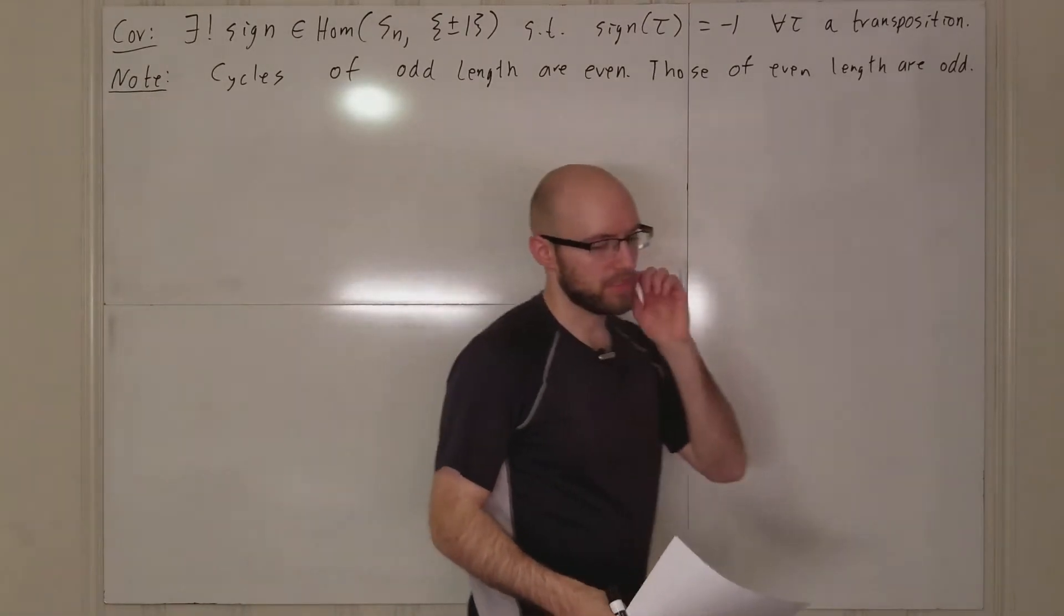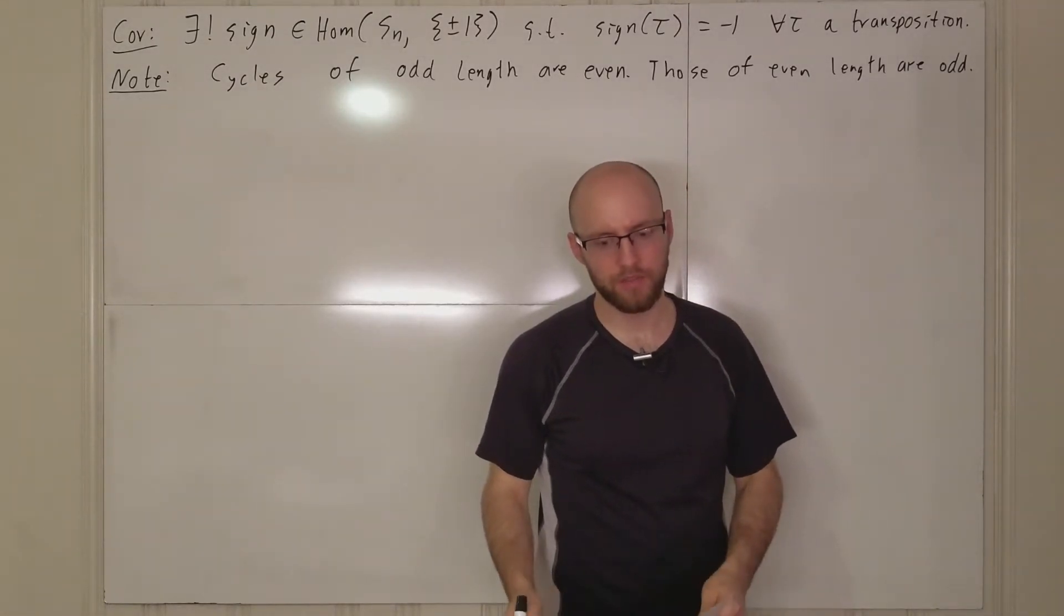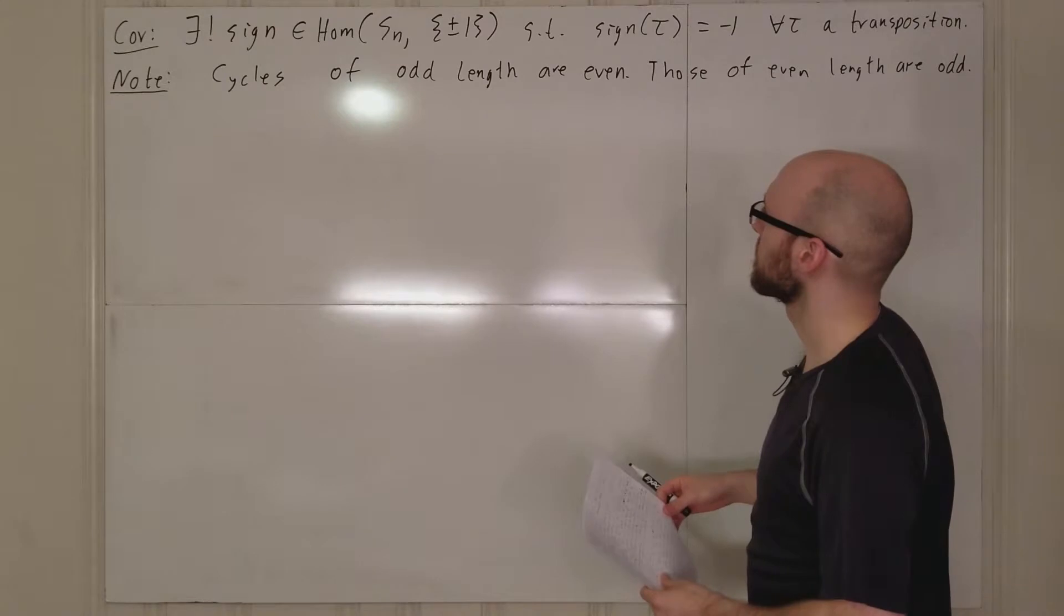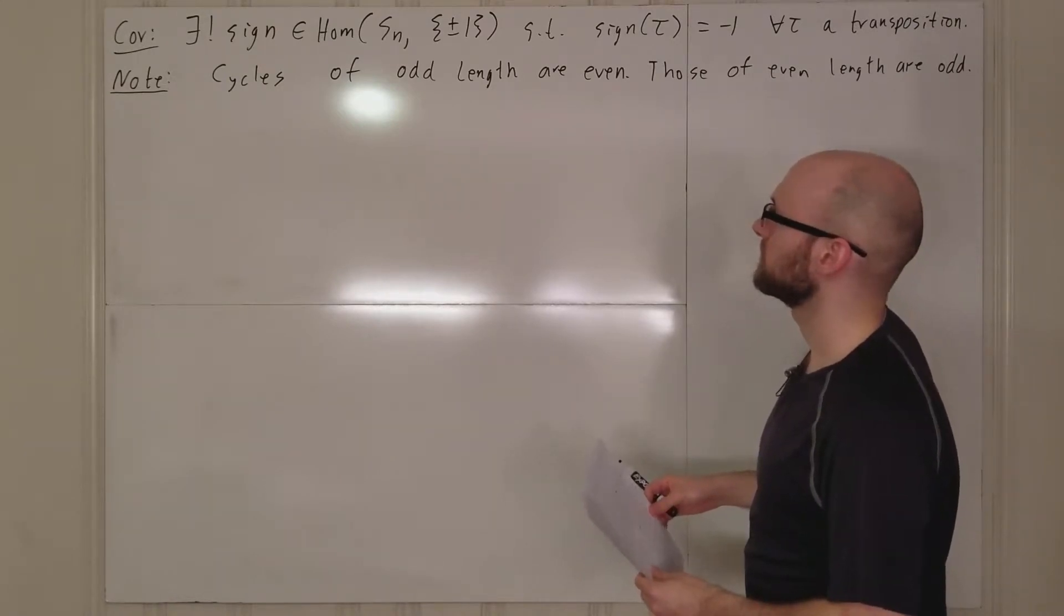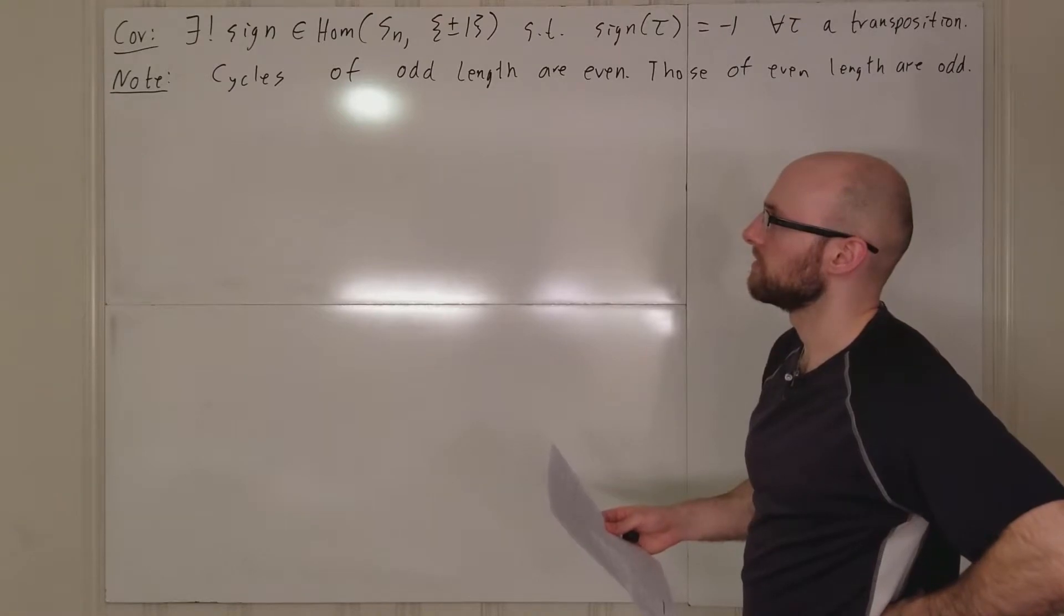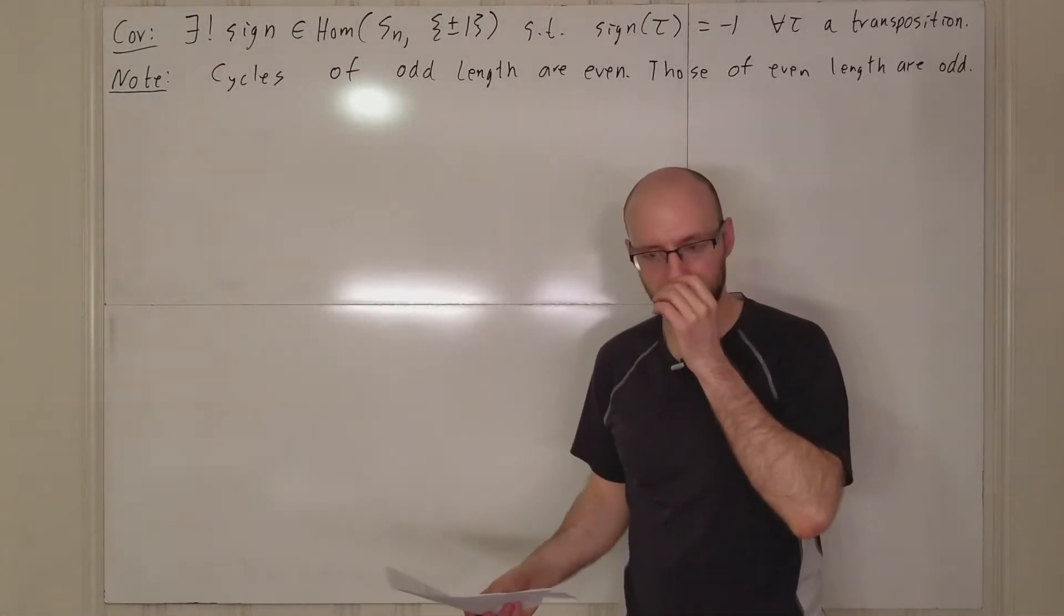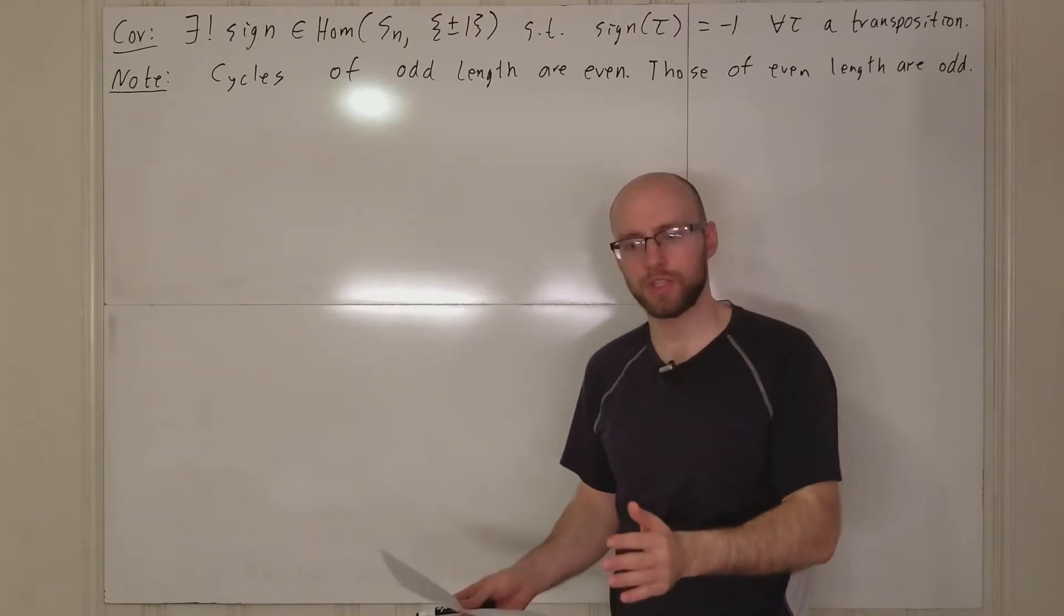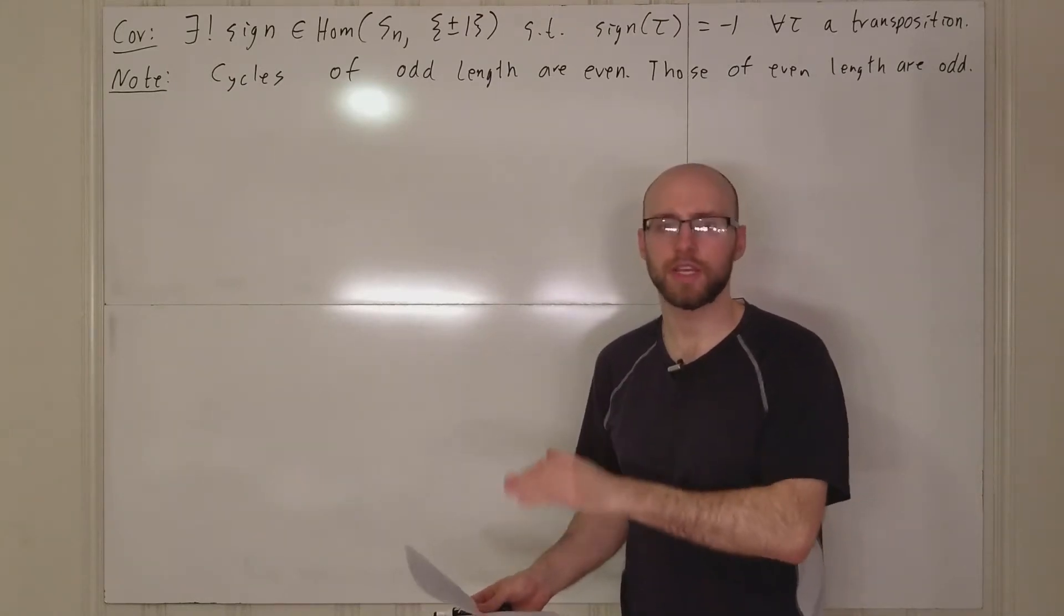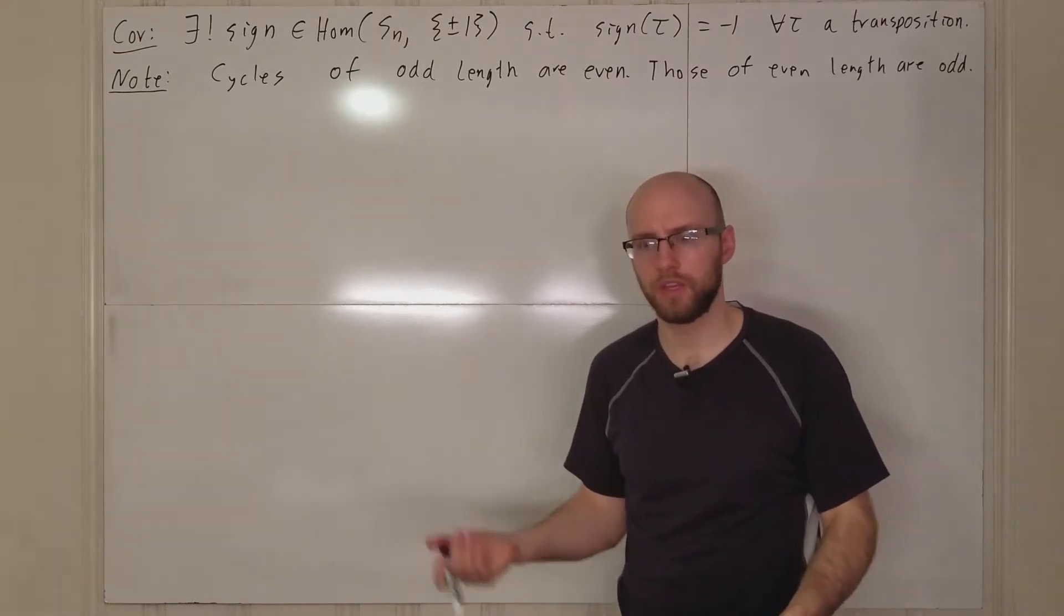And even though a transposition consists of two different, you just have to think of it in terms of transpositions, and remember that transpositions, every transposition has an even number of indices. A transposition has two indices in it, so its length is two.